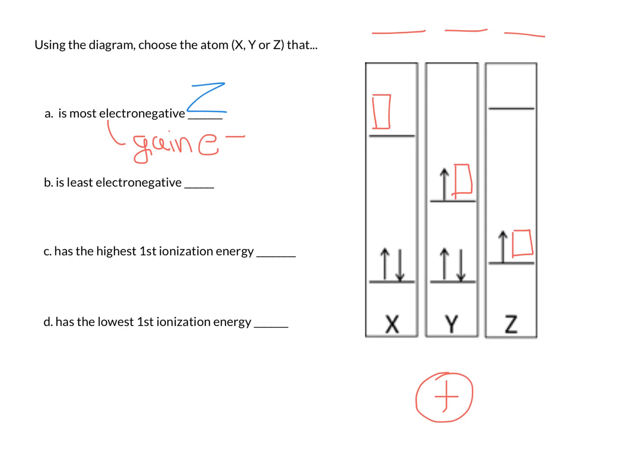The one that is least likely to gain an electron is going to be X, because it has the highest energy empty space. Now, if we want to look at ionization energy, remember that ionization energy occurs when we lose an electron.